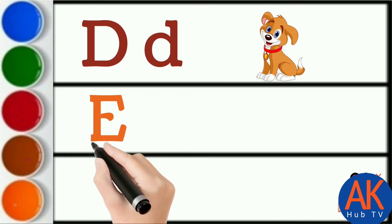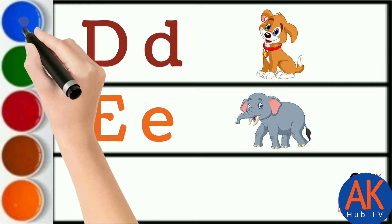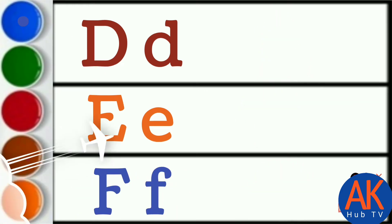Orange color E. E for elephant. Blue color F. F for fish.